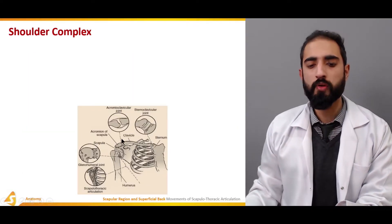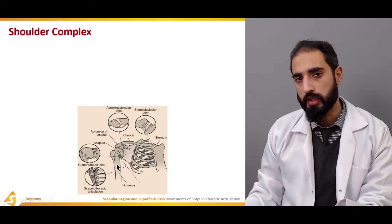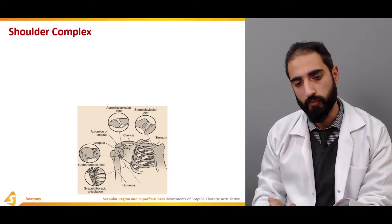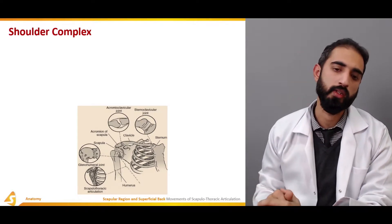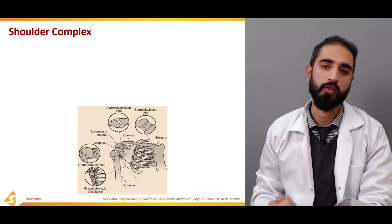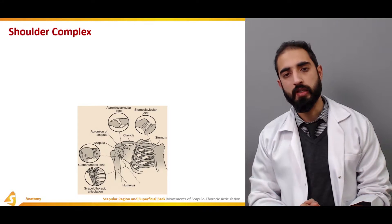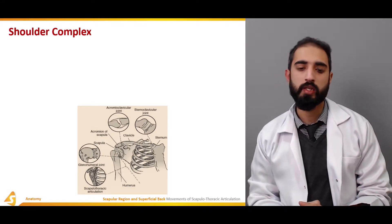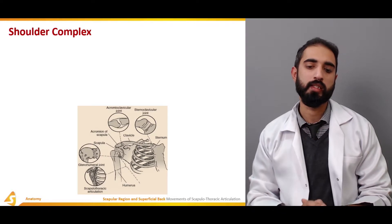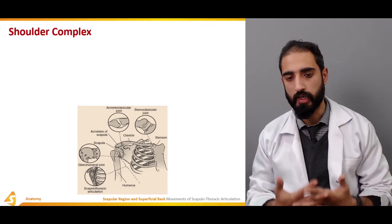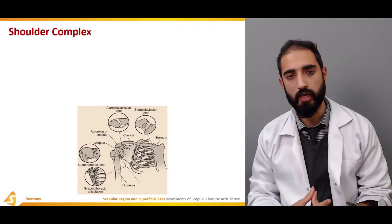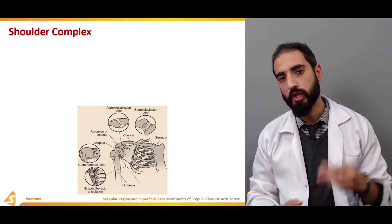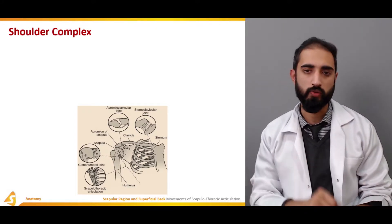Regarding the shoulder complex: the glenohumeral joint is the joint between the glenoid cavity and the humerus; the scapulothoracic articulation is the functional joint between the scapula and the thoracic cage. The shoulder complex as a whole consists of the sternoclavicular joint, the acromioclavicular joint, the scapulothoracic articulation, and the glenohumeral joint — three anatomical joints and one functional joint.